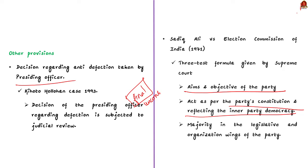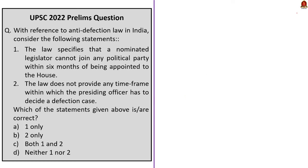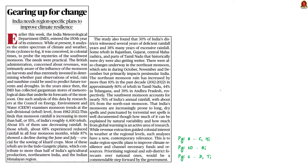In this news article discussion, we saw about who is a defector, provisions for defection and disqualification, exceptions in the anti-defection law, and who decides the question of disqualification. Now let us move on to the next news article discussion about the successful completion of 150 years of existence of the Indian Meteorological Department, IMD.